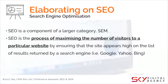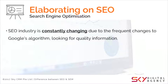SEO is also constantly changing because Google is always improving its algorithm, looking for more quality information. Having many backlinks no longer guarantees ranking on page one. Google has updated its algorithm to identify quality information versus bad links, clickbaits, and the like.